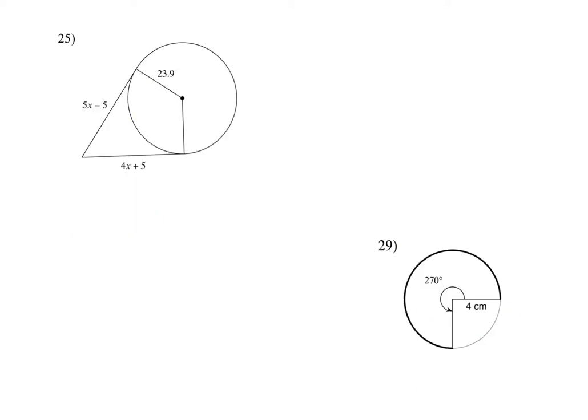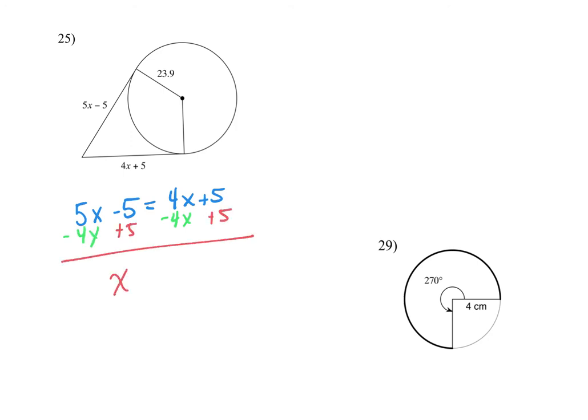This next group uses the same theorem: tangents that intersect at the same point on the outside are equal. So you don't need the 23.9 at all. All you need is 5x minus 5 equals 4x plus 5. Subtract 4x over, add 5 over, and you get x equals 10.